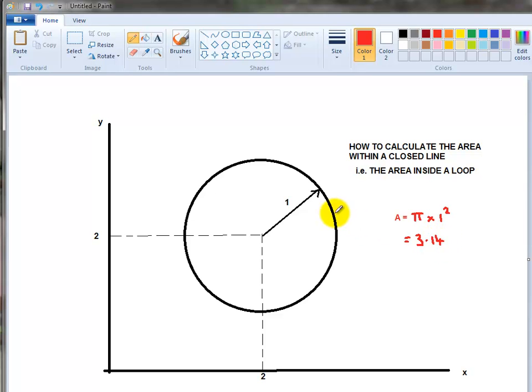Let's pretend that we know eight points around the circumference. That's the first point, second point, third point, fourth point, fifth point, sixth point, seventh point, eighth point. So we've got eight points that define that area. Now we'll represent the area just by drawing straight lines between them.